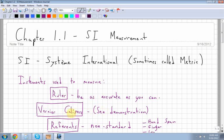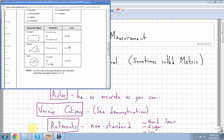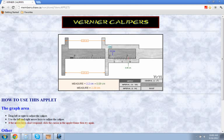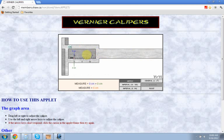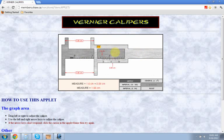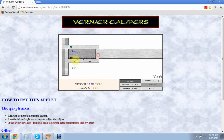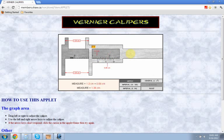Vernier calipers is the next type of measurement. I'm going to show you a demonstration. On a vernier caliper, we have the fixed scale and the moving scale. On the fixed scale, the numbers stay the same all the way across: 0, 1, 2, just like a ruler, 3, 4. The fixed scale is just like a ruler.